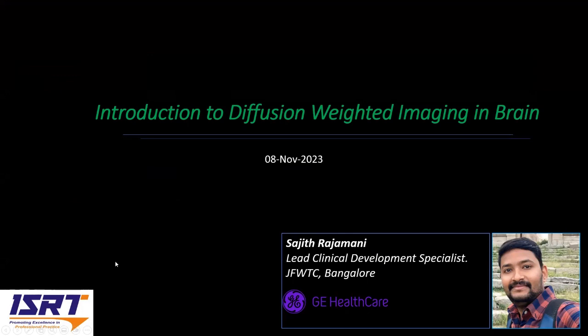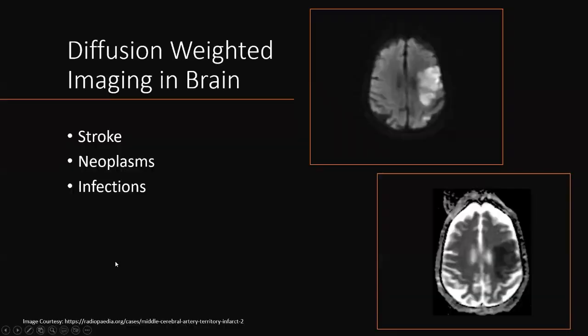Hi, my name is Sajid. Today I'll be sharing some basic technical knowledge about diffusion-weighted imaging in brain. We know that diffusion-weighted imaging is one of the important sequences in brain MR imaging. It is mainly used in the evaluation of stroke, especially ischemic stroke. Then to analyze and grade various types of neoplasms and also to study different types of infections which affect the brain.